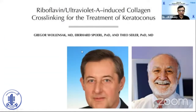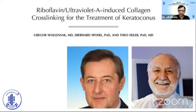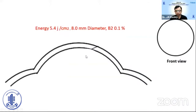These three pioneers changed the world of keratoconus treatment. Unfortunately, Grieger is no more, and Wollensak is rarely seen. Most of the time we see Seiler — Theosilar did the clinical work and Seiler worked on laboratory calculations. Based on physics and biology, Seiler designed the parameters: 5.4 joules for an 8-millimeter diameter with riboflavin at 0.1%.